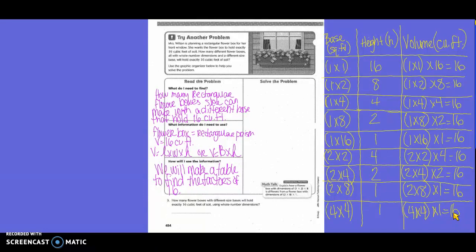Basically, I've hit where they're the same factors, right? So technically, yes, I could do a couple more, but I've already done them. They're just written in a different order, right? So we're done. So how many flower boxes with different size faces will hold exactly 16 cubic feet of soil using whole number dimensions? So how many did we come up with? 1, 2, 3, 4, 5, 6, 7, 8, 9. So 9 flower boxes could be made.